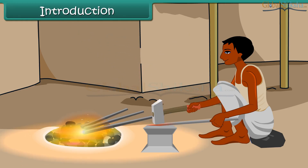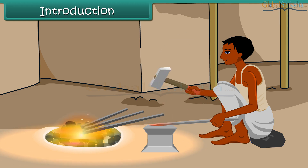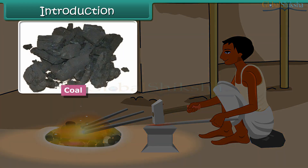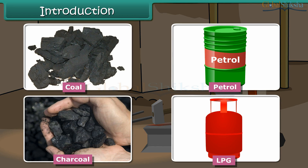The blacksmith burns coal to get hot iron which can be beaten to the desired shape. A variety of fuels is used in daily life such as coal, petrol, charcoal, LPG, etc. Do you know which chemical process is taking place during the burning of these fuels? It is combustion. In this lesson you will learn about combustion of fuels.